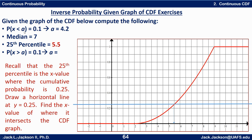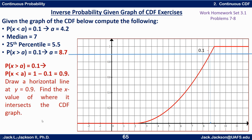Fourth problem — be careful how this differs from the first: the probability that x is greater than a is 0.1. Since this is a greater-than probability, the CDF of a equals 1 minus 0.1, which is 0.9. Draw a horizontal line at y equals 0.9, find where it crosses the graph, pull straight down and read off the x value. That looks like about 8.7. So the vertical distance from 0 up to that point is 0.9, and the remaining distance above is 0.1, corresponding to the probability greater than 8.7.